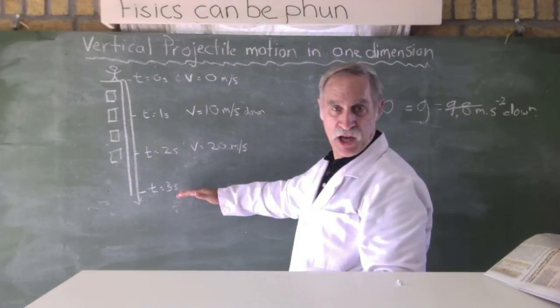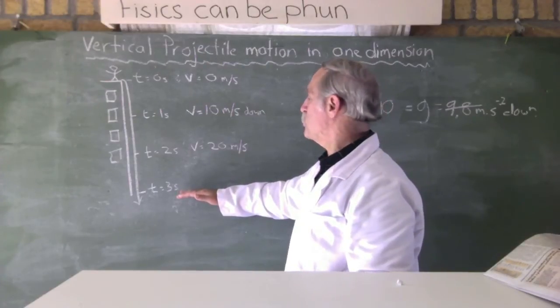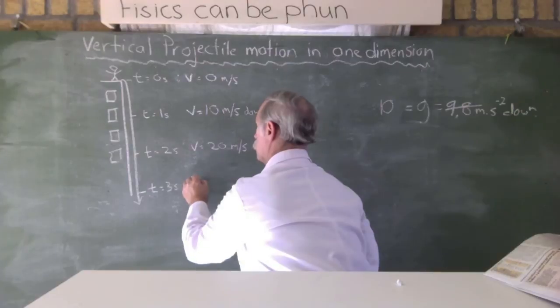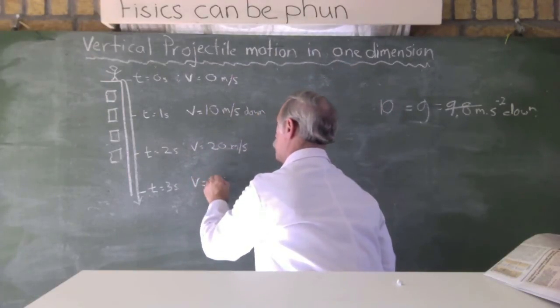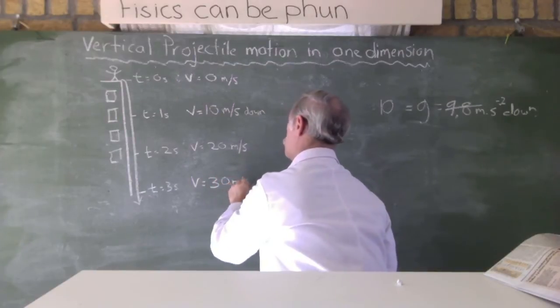And how easy is it to work out after three seconds? What would the velocity be? It would be, it would add another 10. So, it would be equal to 30 meters per second down.